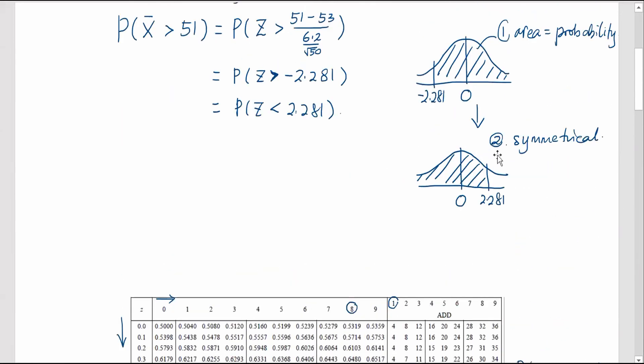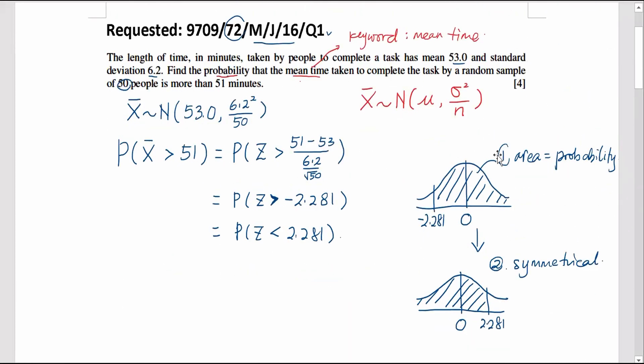Hence, we found the answer for this question. The probability is 0.9887. And we keep the answer to three significant figures. So it gives us 0.989. Three significant figures. Hence, this is the answer for this particular question. That's all for this video. Bye-bye.